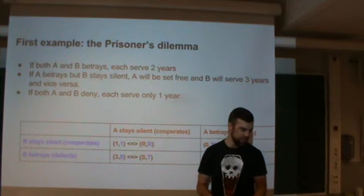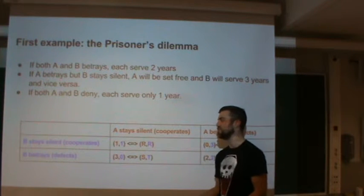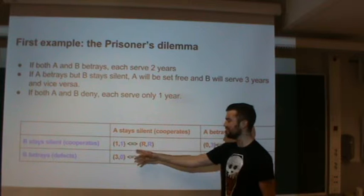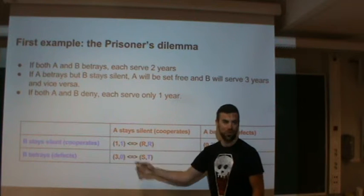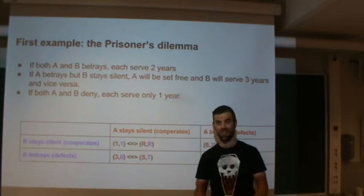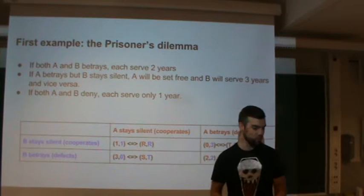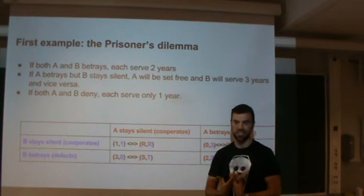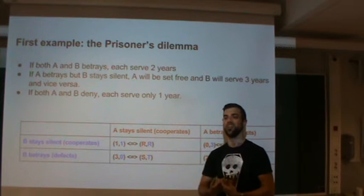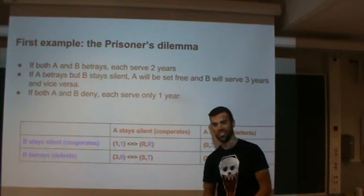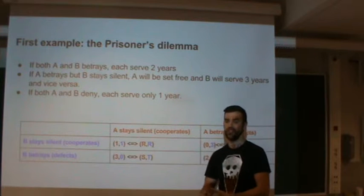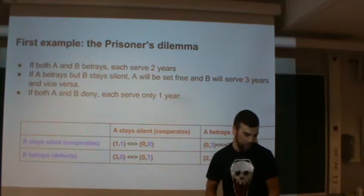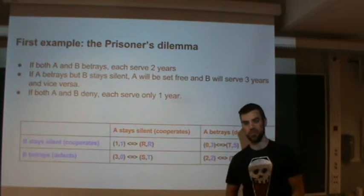This can seem counterintuitive, given that the lowest total prison time is the one-one outcome where both stay silent and cooperate. But in fact we have an equilibrium where both defect — they cannot make their own situation any better by changing their action. That was the first example of game theory.